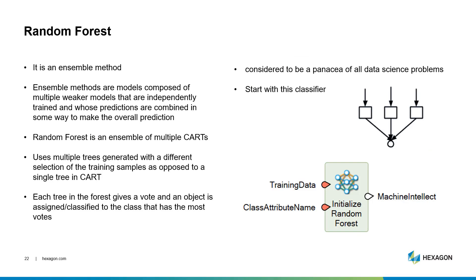The next is Random Forest. In Random Forest, we grow multiple trees as opposed to a single tree in the CART model, and these trees are independent of one another. Each tree gives a classification result, and we say the tree votes for the class. Just like in an election, the forest chooses the class that has the most votes. Random Forest is used across all different disciplines, not just geospatial, and if you're having difficulties figuring out which one to use, you should start with this classifier.